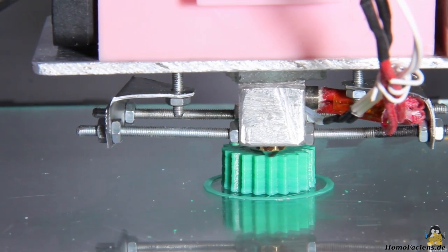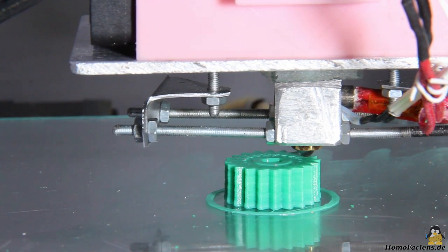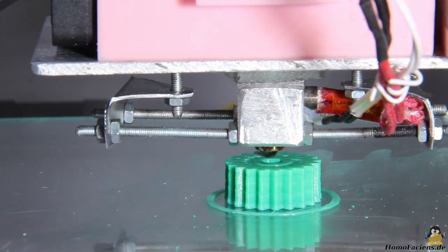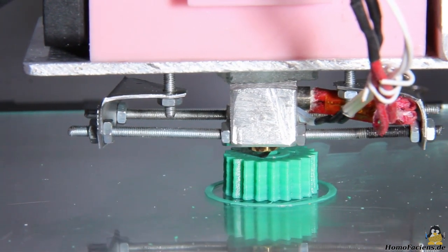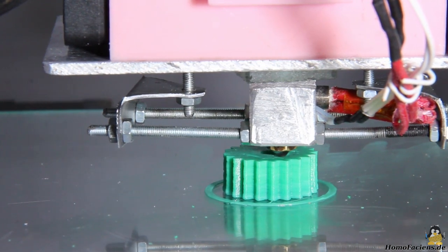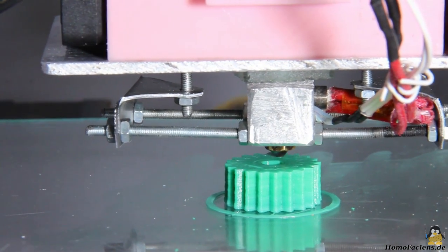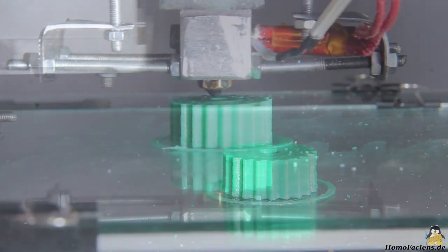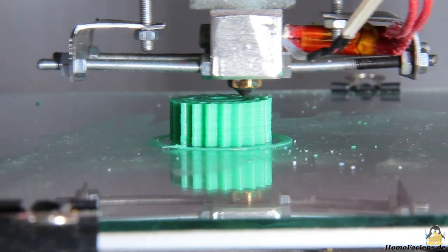So much about the construction principles for now, let's start some test prints. Following the good old RepRap spirit, I printed the stepper pinion at a speed of 10mm per second in the first video about this extruder prototype. The print quality was more than sufficient to get a working gear measuring only 25mm in diameter.